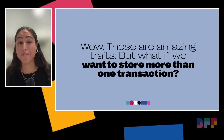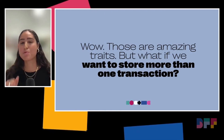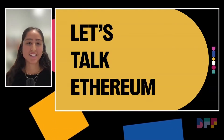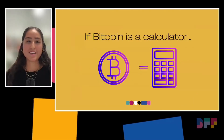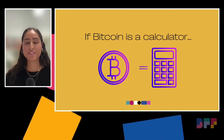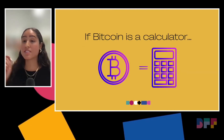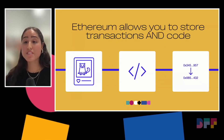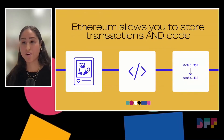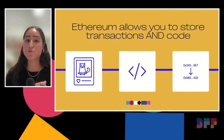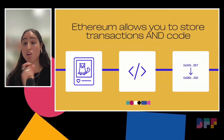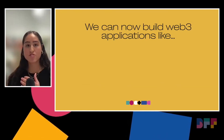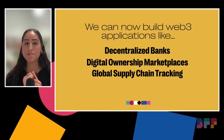You might be thinking: those are amazing traits, but what if I want to do more than just transactions? Let's talk about Ethereum. If Bitcoin is a simple calculator, then Ethereum is a smartphone — it can do everything Bitcoin can and more. The reason is Ethereum allows you to store both transactions and arbitrary code. So now you can have things like NFTs, applications, and transact. Let's look at some examples we could build.